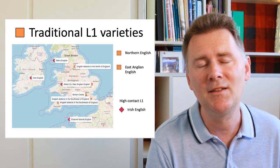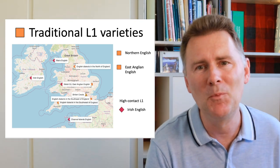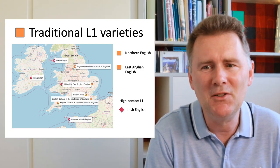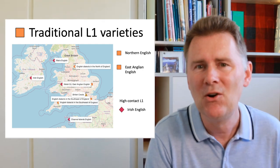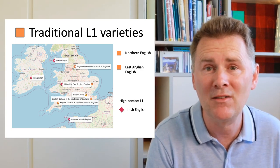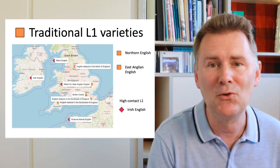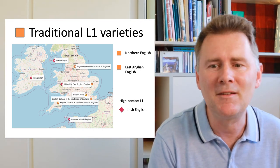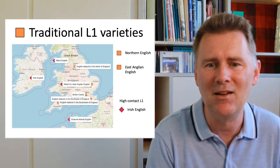Dialects are non-standard language varieties typically tied to a specific geographical region. They are characterized by a low degree of contact with other dialects or languages, and are spoken in rural rather than urban areas. Examples of traditional L1 varieties in the E-Wave include Northern English and East Anglian English. You might think every variety spoken in the British Isles should be a traditional L1 variety, but that's not quite true. Irish English, Welsh English, Manx English, and Channel Islands English are classified as high contact L1 varieties. There's also British Creole, right there on the map.